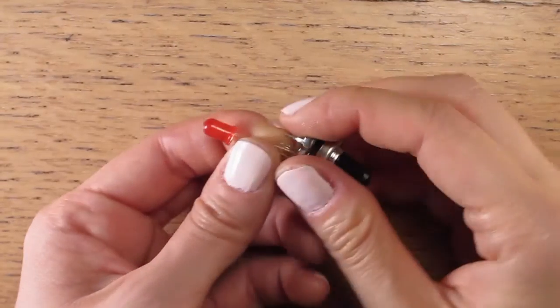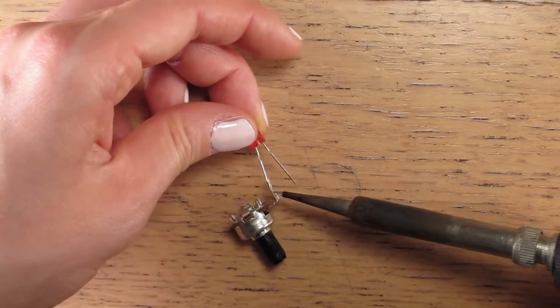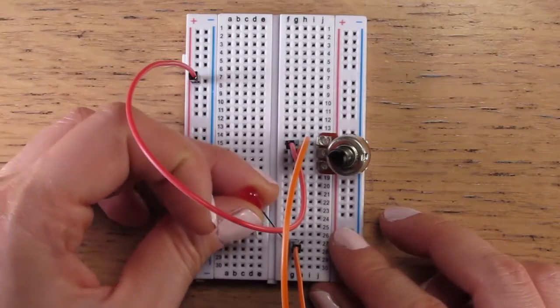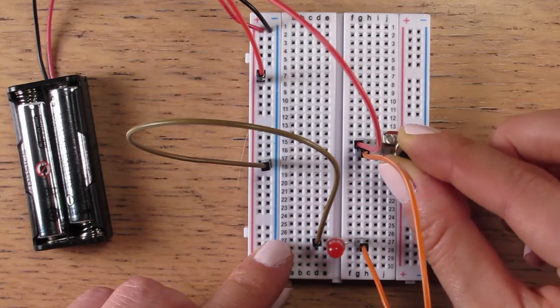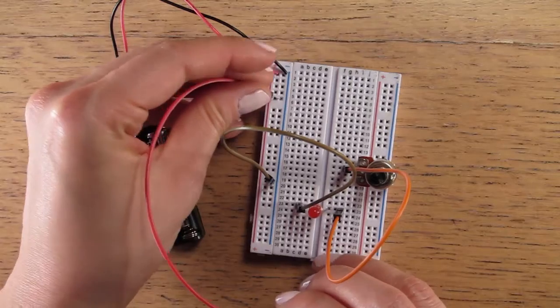So instead of holding your components together, taping them, or permanently soldering them, you can temporarily attach them to the breadboard. This lets you test components in a way that's easy to see and understand, and you can reverse it if you make a mistake.